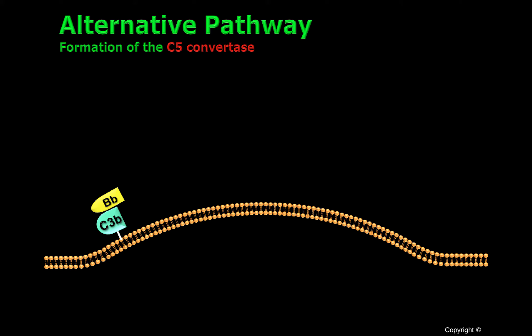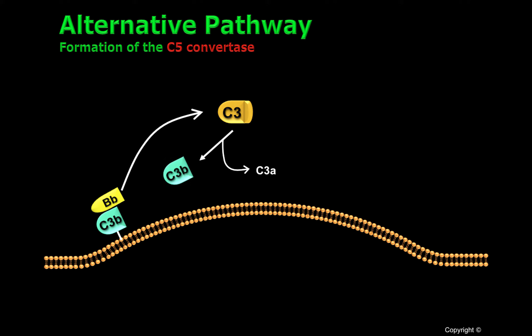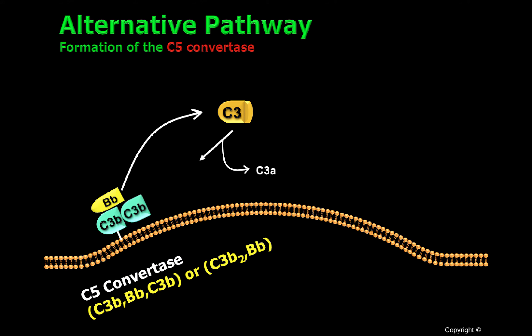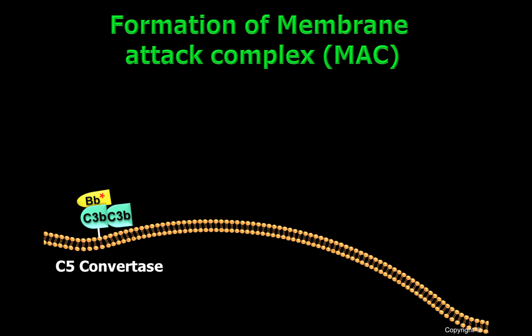The C3 convertase can cleave C3, and if this C3B molecule binds to the C3 convertase, it will generate another complex called C5 convertase. The C5 convertase, or C3B-BB-C3B, has also been shown in literature as C3B-2BB. The C5 convertase C3B-BB-C3B will cleave C5, generating C5A, a potent inflammatory molecule, and C5B.